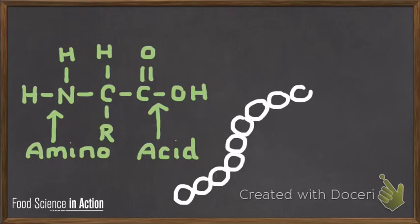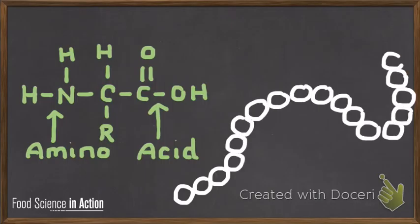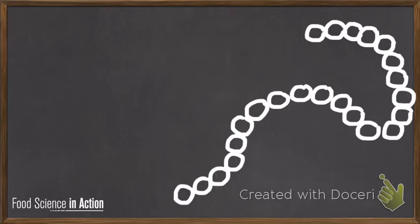The amine and acid groups join together to form longer chains called polypeptides, and eventually these polypeptides become big enough to be called proteins. When we change the DNA of an organism, it results in different building blocks or amino acids in the final protein.